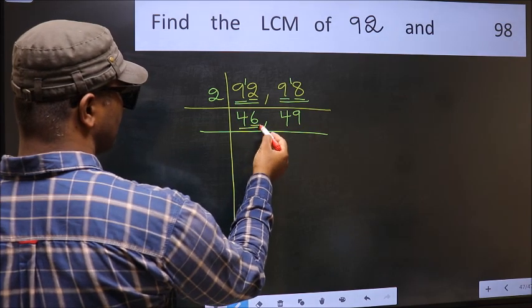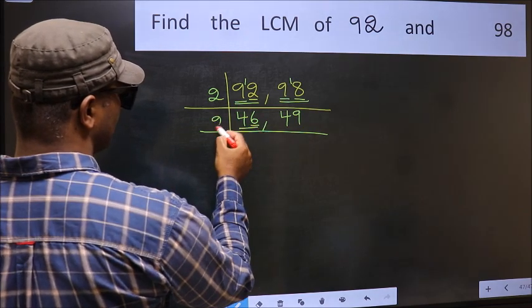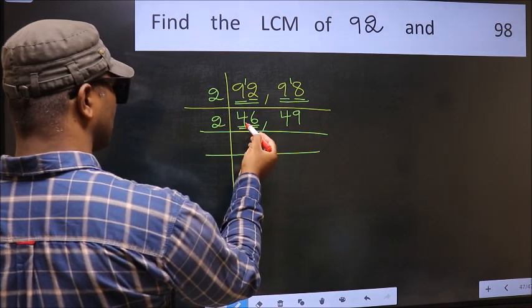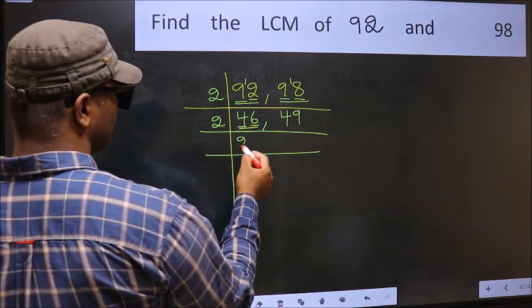Now here we have 46. Last digit 6 is even, so take 2. First number 4. When do we get 4 in 2 table? 2 times 2 equals 4.